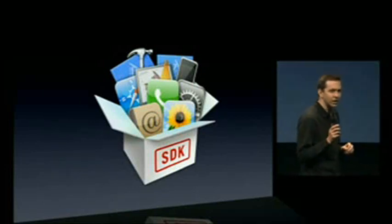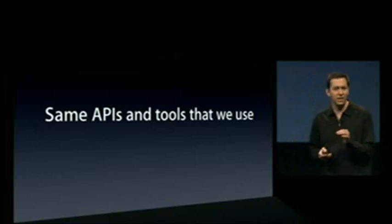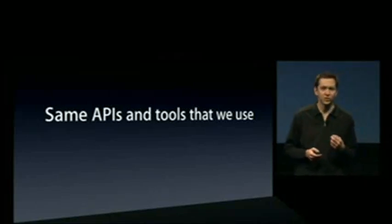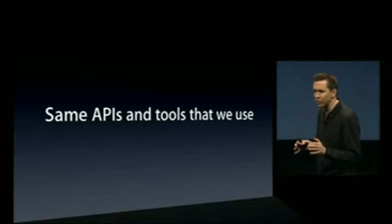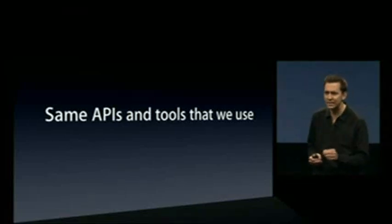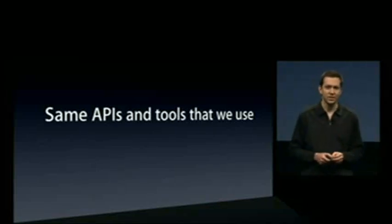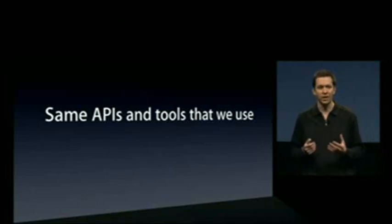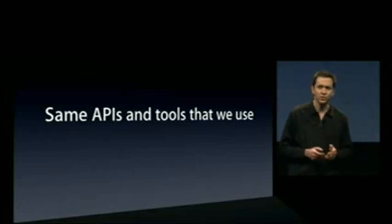Let me start by telling you what we're doing for developers. A year ago we announced the native iPhone SDK, and with it we enabled developers to use the same native APIs and tools that we use internally to build all of the applications that ship as part of the iPhone. Our goal was to make developers successful. We gave them the best tools, APIs, and frameworks ever for building applications — and what they did with this blew us away, to the tune of over 25,000 apps in eight months. It's incredible.